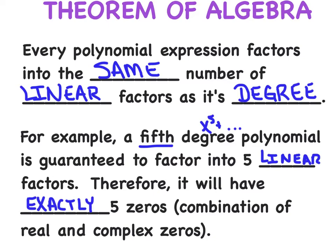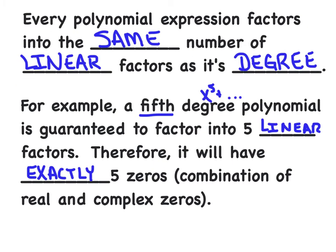Now, why haven't we used the word exactly before? Well, in the past, we would have said there would be at most five zeros. In fact, we would say at most five real zeros. Now, we're saying there's exactly five zeros. They might all be real, or it might be a combination of, you know, three real and two complex, or some kind of combination of those.